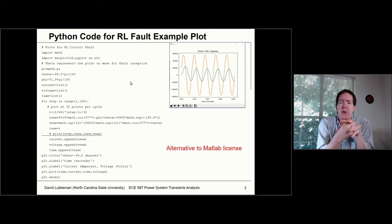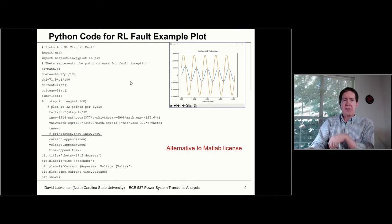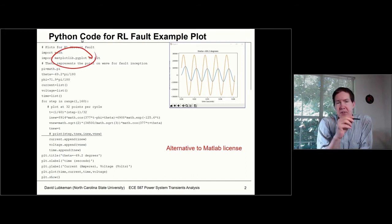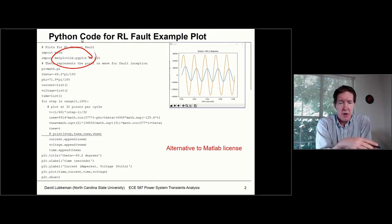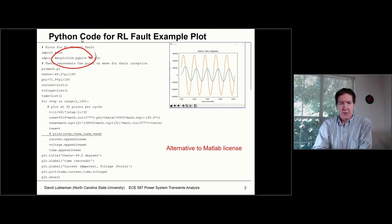In this case, this is an RL fall example, kind of similar to what you'd have to do in homework number one. What I'm doing is making use of this library called matplotlib. This is actually a kind of a MATLAB emulation — in case you're familiar with using MATLAB, you can do some of the same things in Python. This is some example code you can make use of to get started.